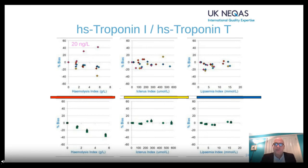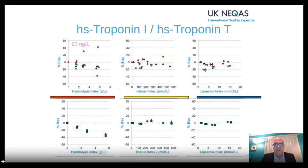Looking at troponins, hemolysis is probably the thing you would worry about most in real life — getting blood from someone who apparently has had a heart attack. Most methods show a decrease in apparent troponin, whereas the Ortho system shows a slight increase. If you are going to have an effect, perhaps the more fail-safe system would be to have a slight positive rather than missing things with a slight negative. These are high-sensitive troponins — troponin I and troponin T — with the T being a single manufacturer.